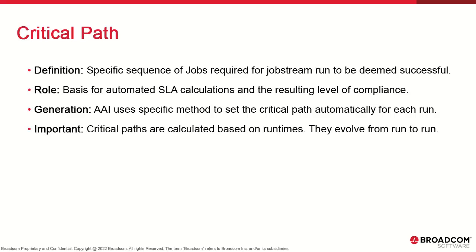The critical path is specific to a job stream run, not the scheduler definition or AAI job stream. For each run, AAI calculates a critical path. If a job stream runs a thousand times a year, you potentially have a thousand different critical paths. This is important because it means a job could be included in the critical path of one run but not the next. Some jobs are constant — they're consistently included in the critical path. Others may or may not make it. And others are never included.